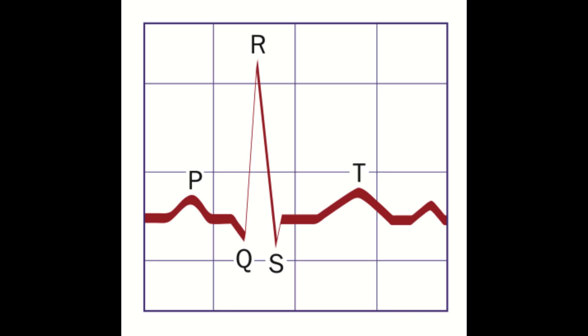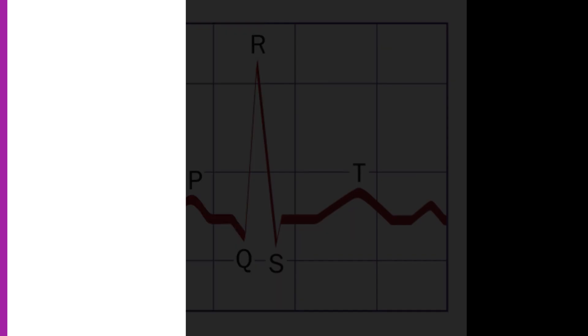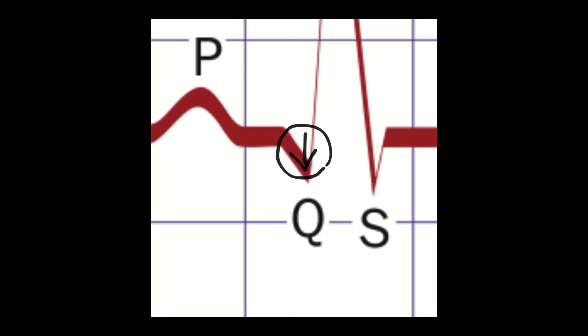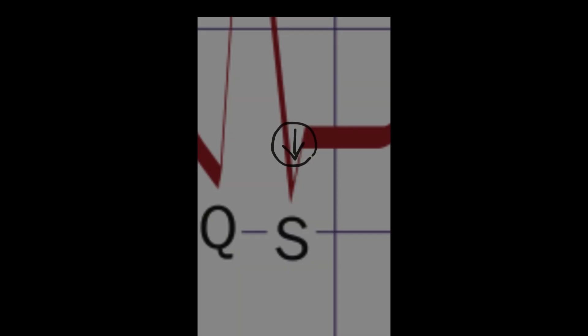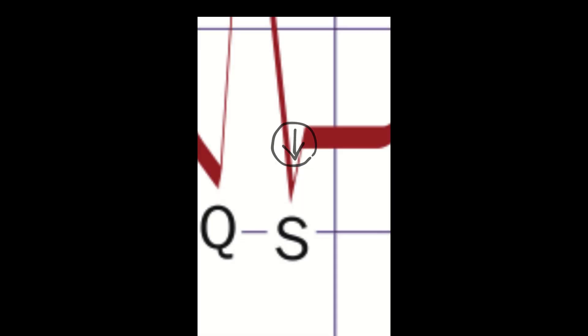The QRS complex is composed of three distinct waves: the Q wave, the R wave, and the S wave. The Q wave is the first downward negative deflection after the P wave, followed by the R wave as the upward deflection after the Q wave, and then the S wave which is the downward deflection following the R wave.